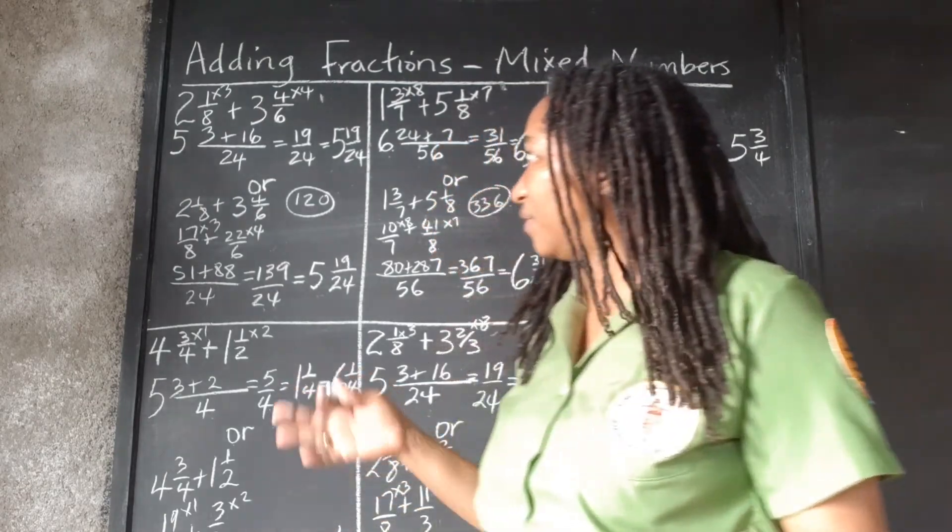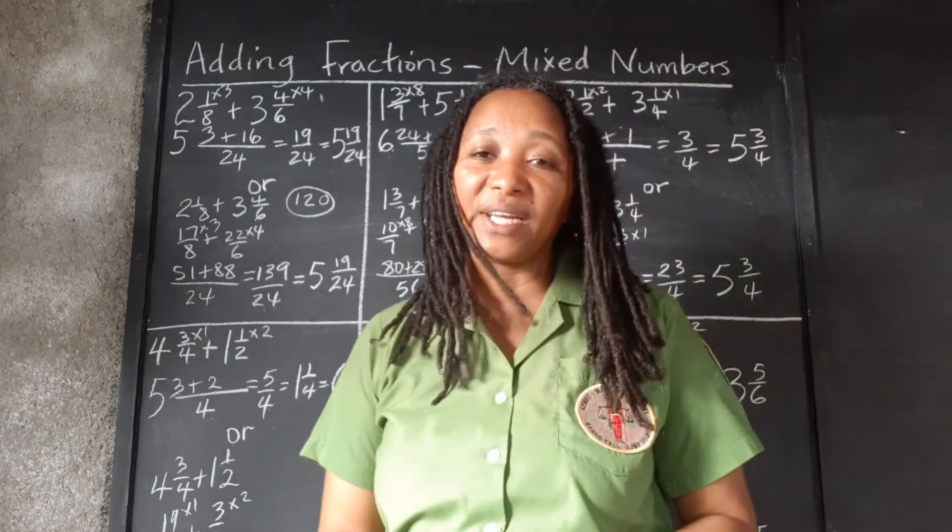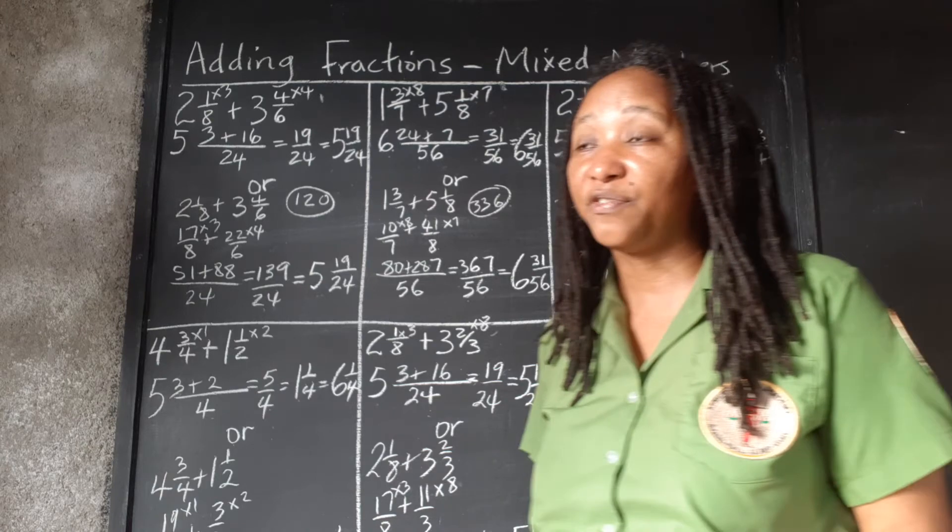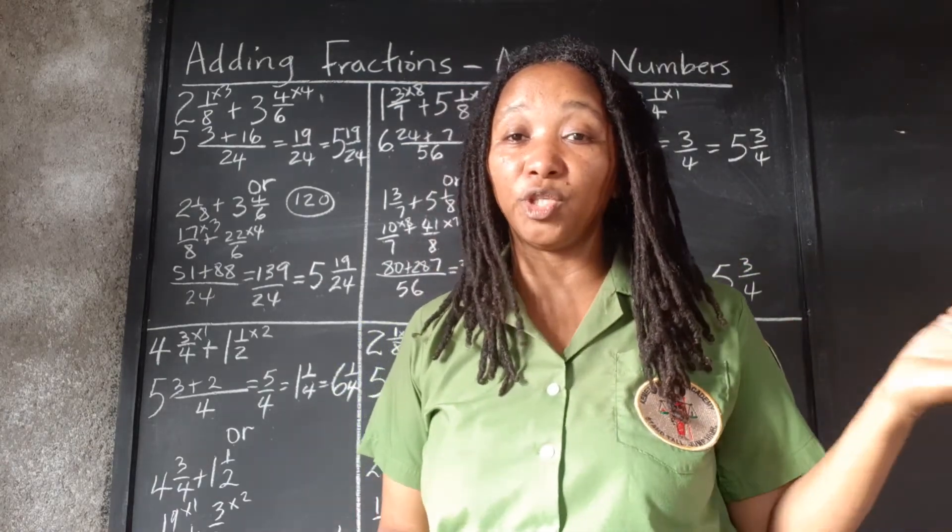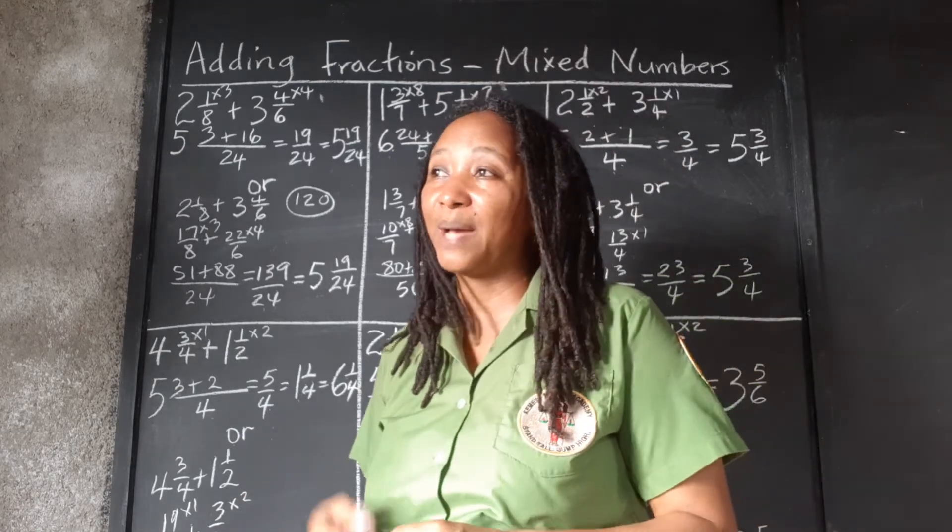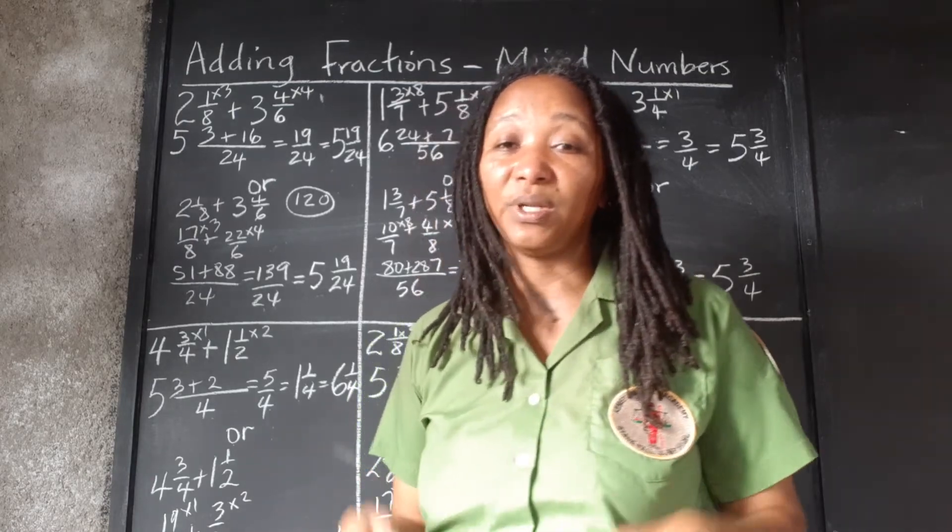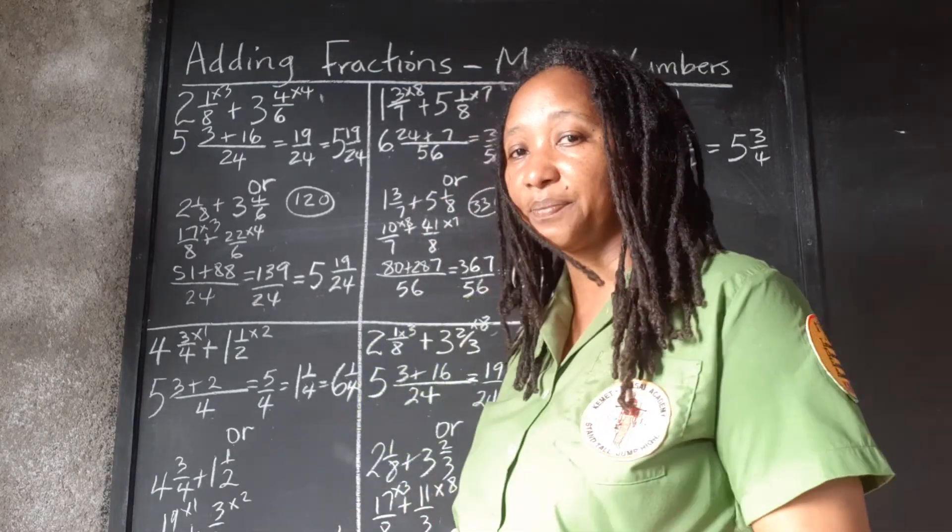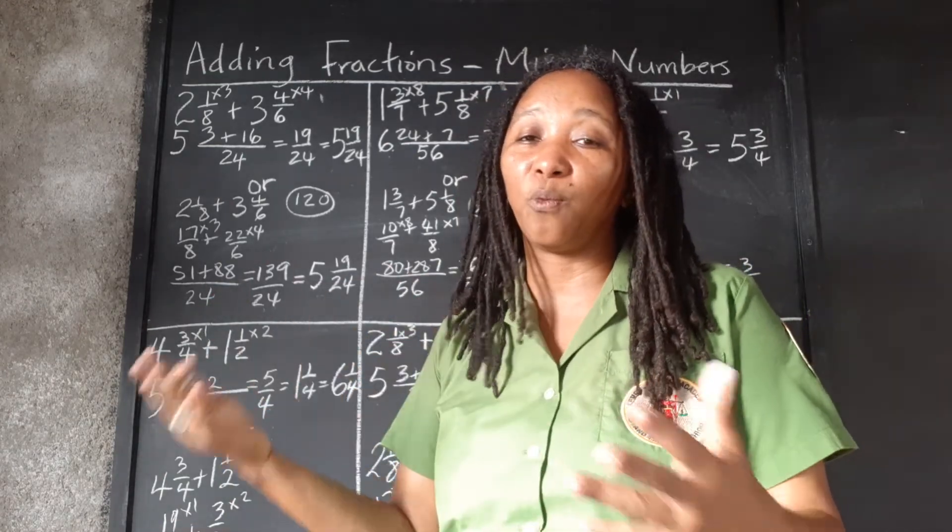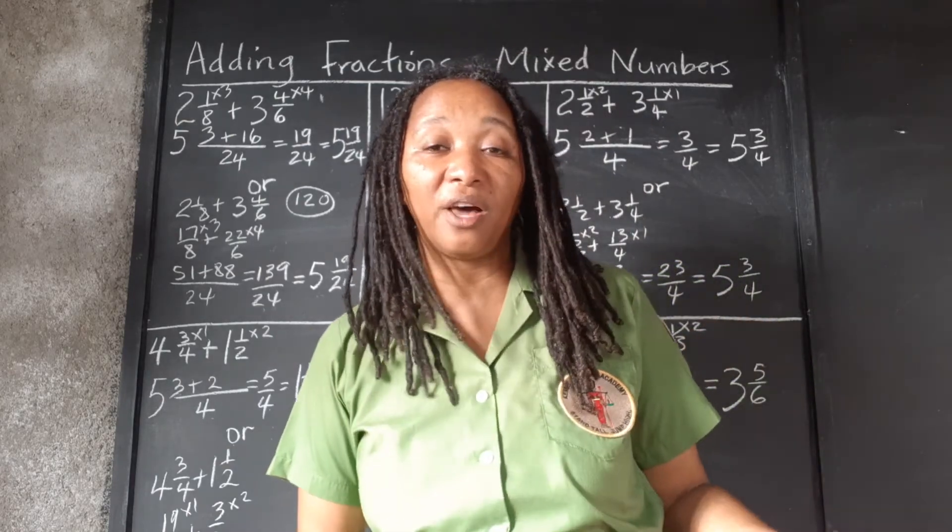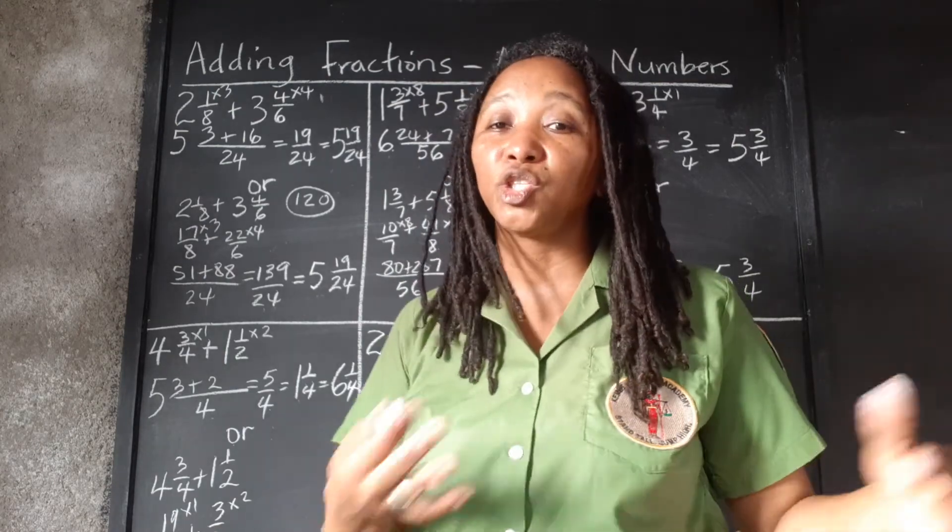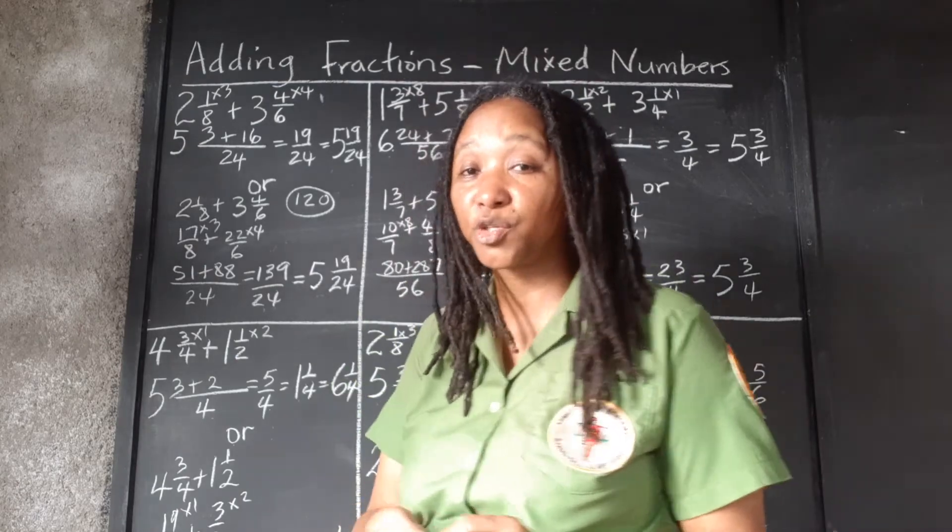So whichever method you prefer to use or whichever method you are asked to use, you should be able to handle yourself. And if you want to use one method and then use the other to double check, that's another way to go about doing things. So sometimes we do work and we just want to make absolutely sure that we are correct. So we might use one method, the preferred method that is asked for or the method that we like, but still use the other method.